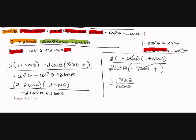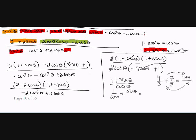Now we can think of this fraction as the reverse of adding two fractions. Everybody knows that when you add fractions with the same denominator, you just add the numerators. Using that same logic in reverse, I can rewrite 1 plus sine theta over cosine theta as 1 over cosine theta plus sine theta over cosine theta. And 1 over cosine is secant theta, and sine over cosine is tangent theta. So the answer is secant theta plus tangent theta.